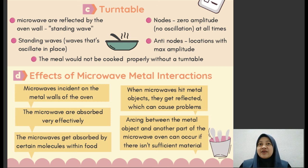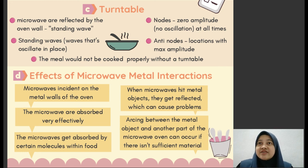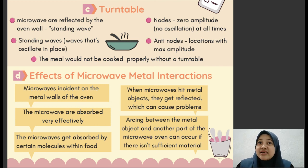There are several effects of microwave-metal interaction. First, microwaves incident on the metal walls of the oven behave similarly to visible light hitting a mirror. Second, the microwaves are absorbed very effectively since the electric field of the wave interacts strongly with the nearly free electrons of the metal. These accelerated electrons re-radiate electromagnetic waves at the same frequency and in phase, so microwaves are perfectly reflected.